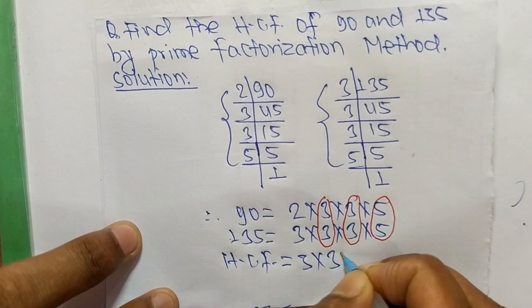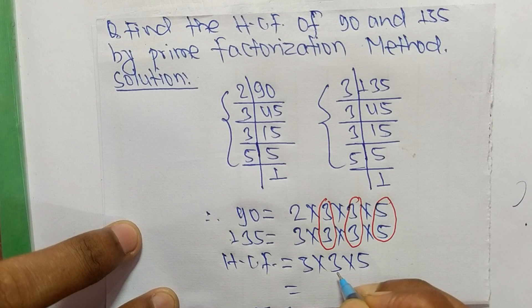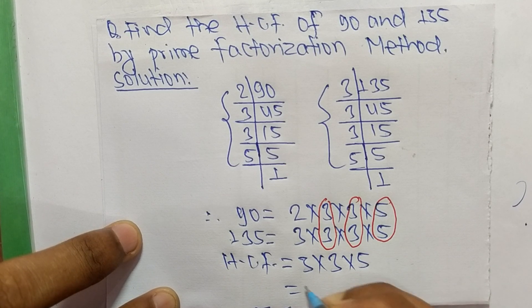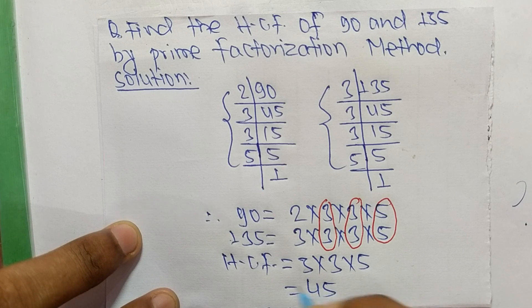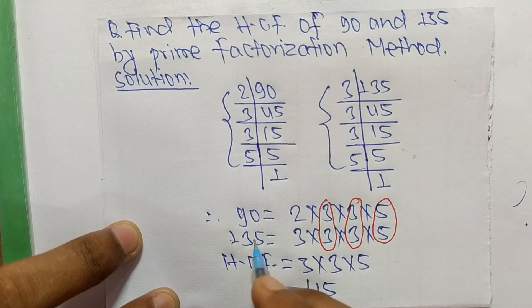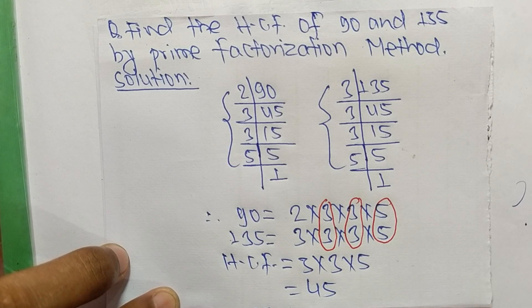So 3 times 3 times 5 means 9, and 9 times 5 means it is 45. So 45 is the HCF of 90 and 135. So this much for today and thanks for watching.